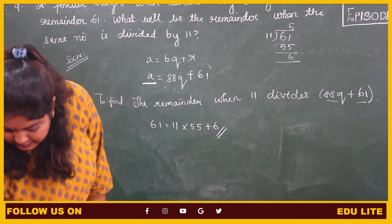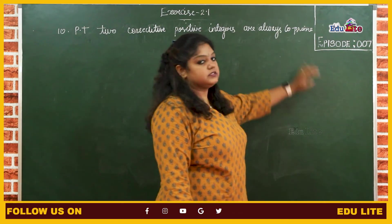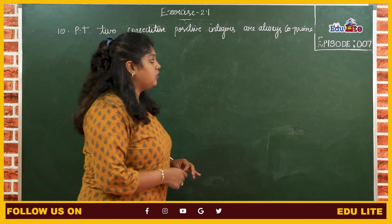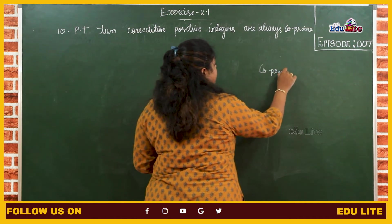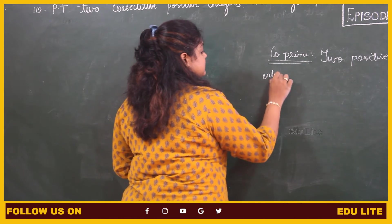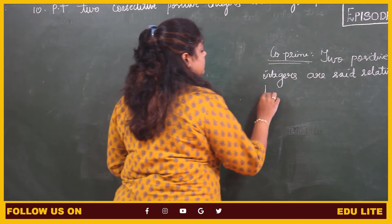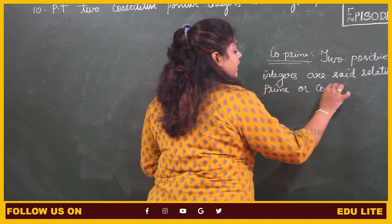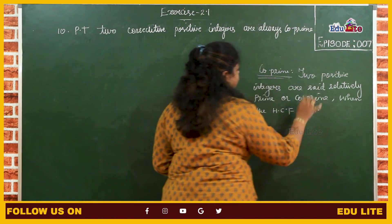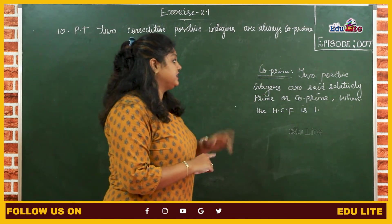In the 10th problem, we have to prove that two consecutive positive integers are always co-prime. Co-prime means two positive integers are said to be relatively prime or co-prime when the HCF is 1. So if the HCF of two positive integers is 1, then we call them co-prime or relatively prime.